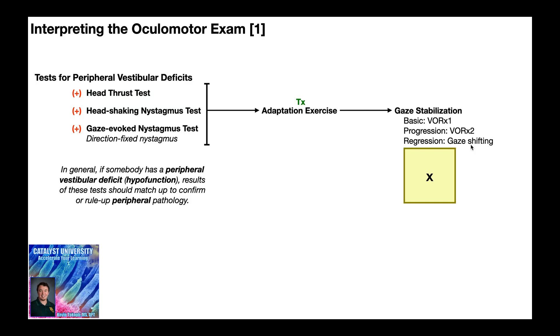So hopefully this video gave you a good understanding about how to interpret the components of the oculomotor exam that are more suggestive of hypofunctions or peripheral vestibular deficits. In the next two videos, as I mentioned, we're going to be talking about the VOR times one and two, and then also gaze shifting. And after that, we're going to go back and look at the same thing here, but interpreting the test results that are more suggestive of a central deficit.